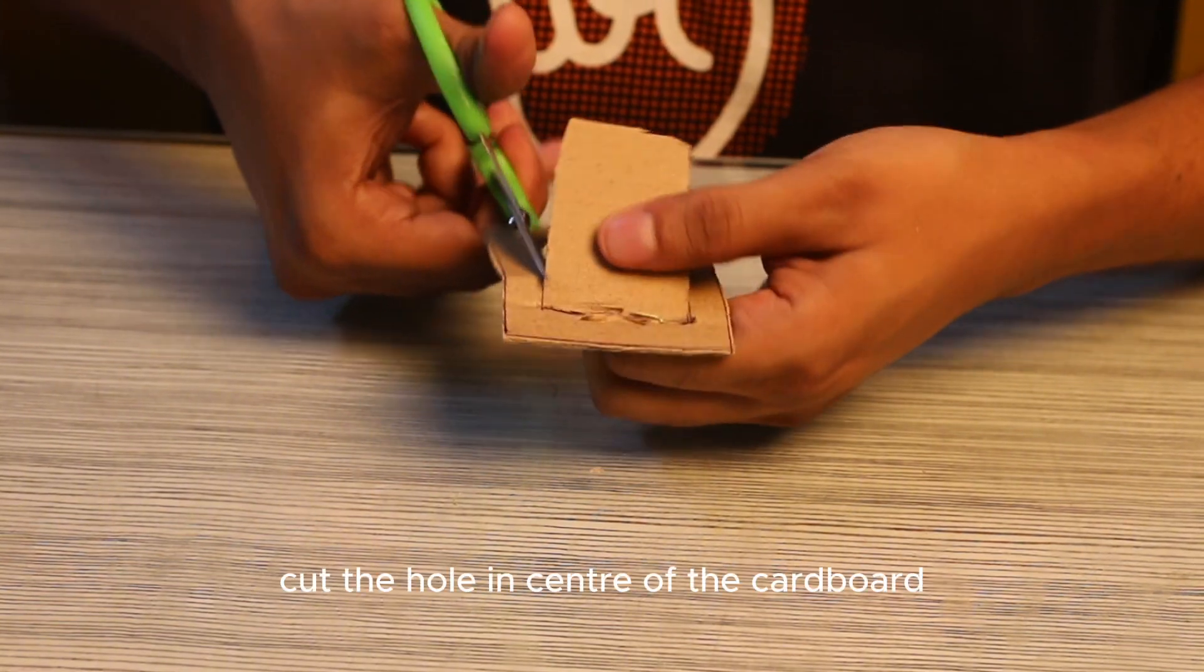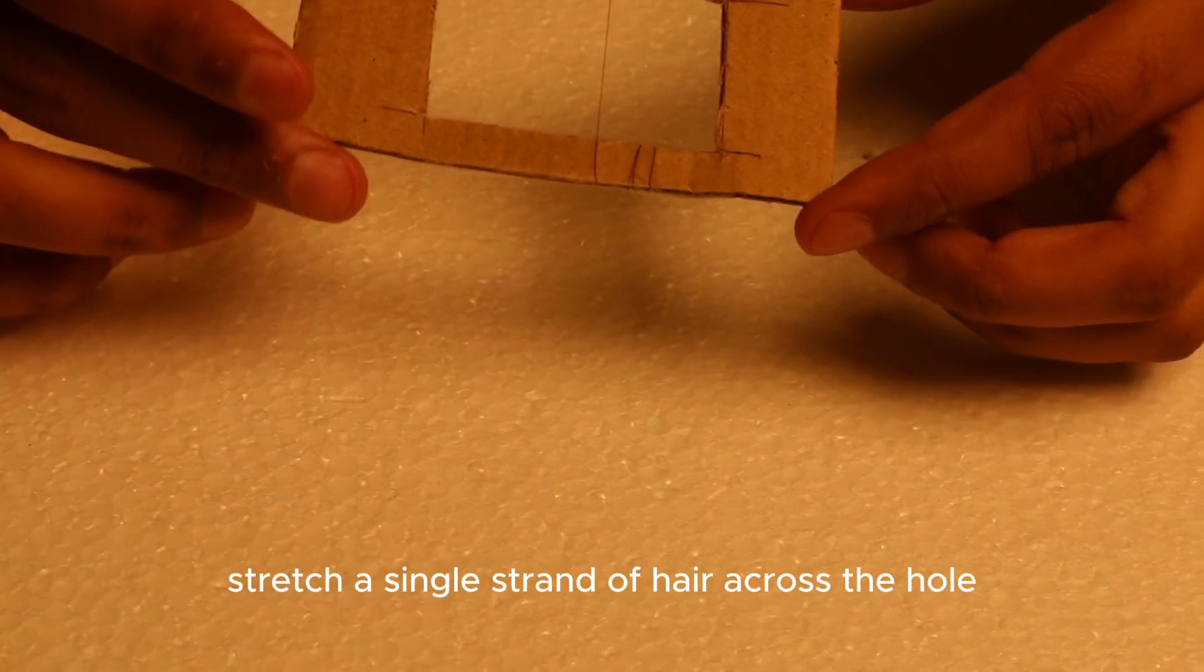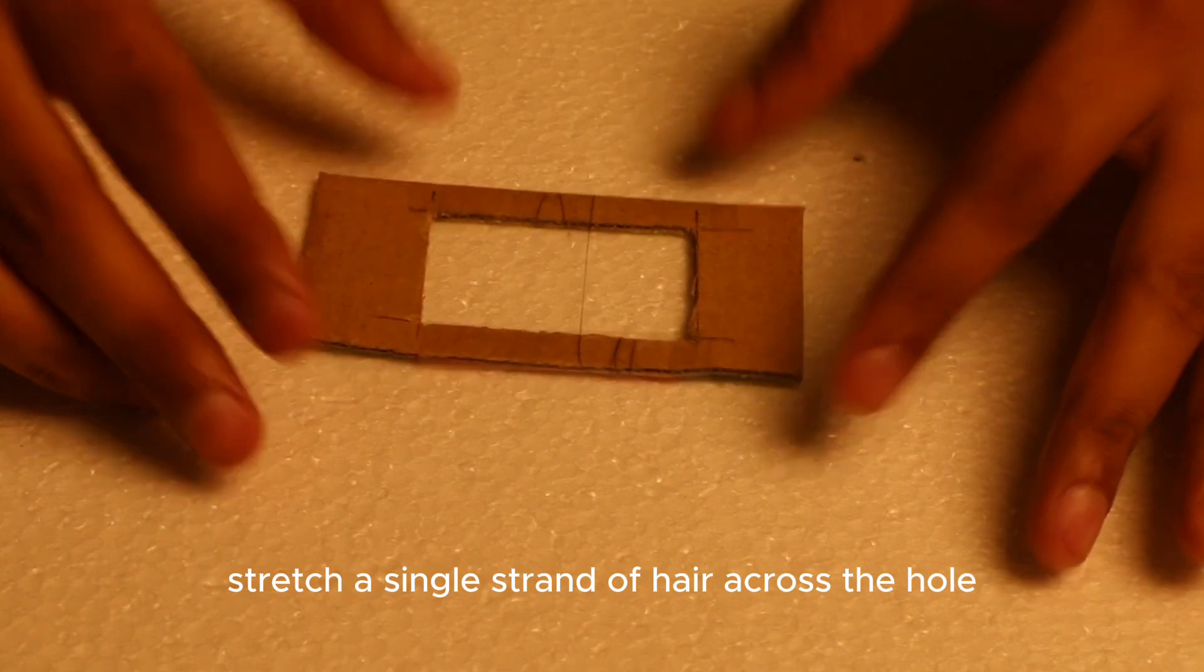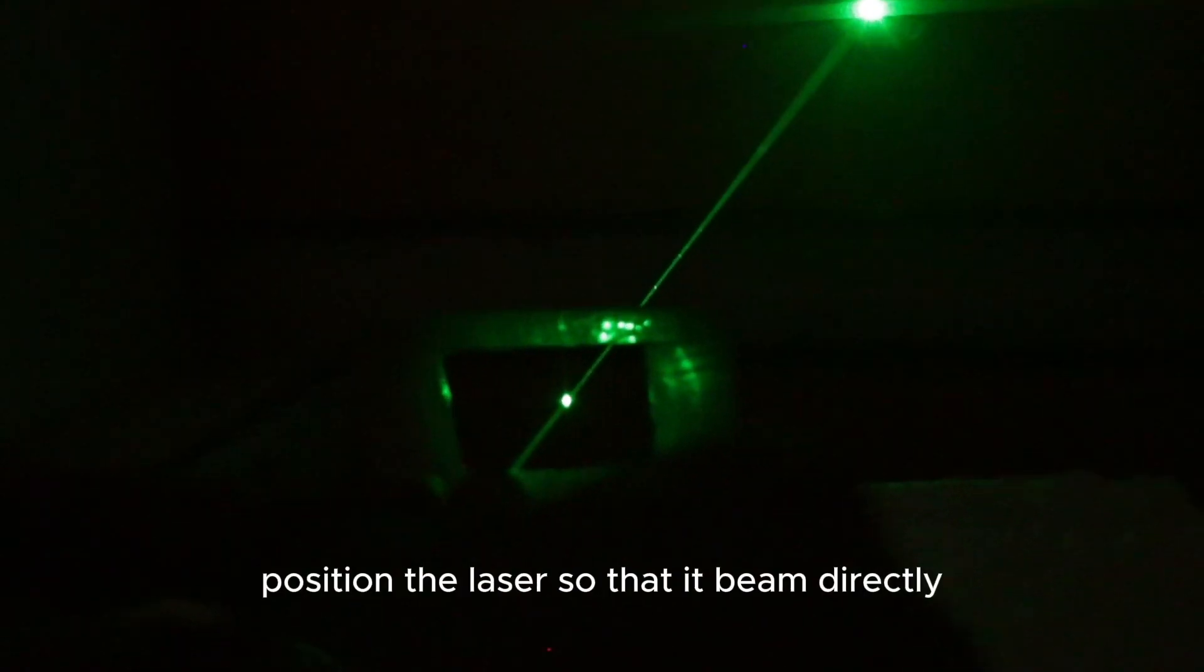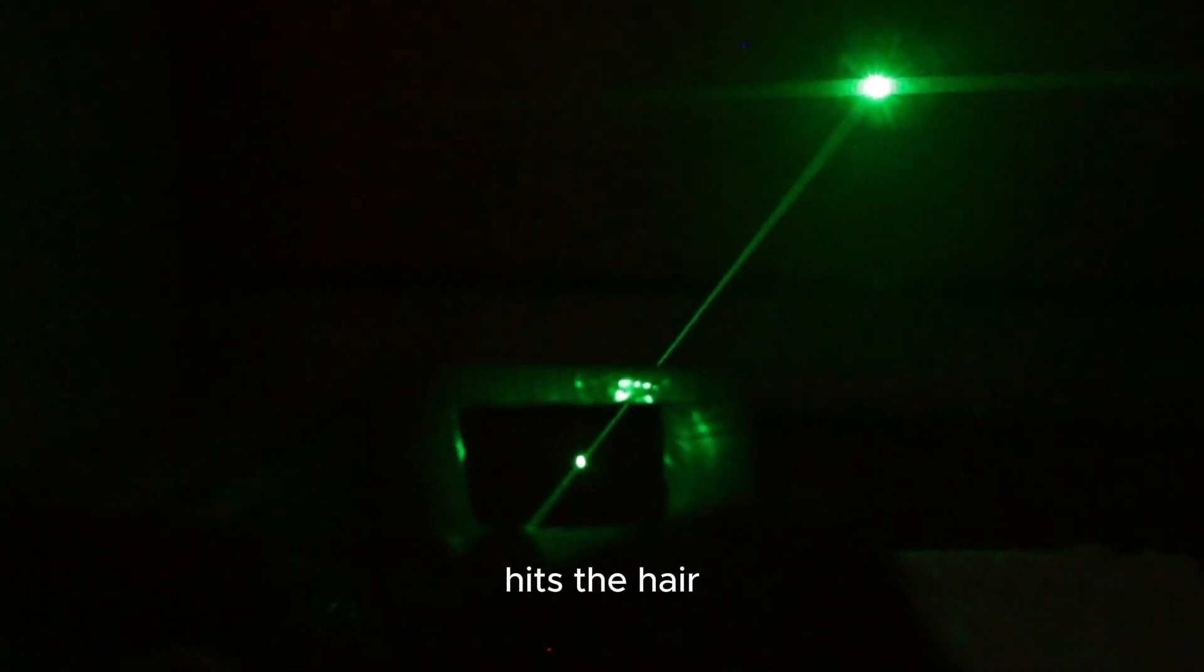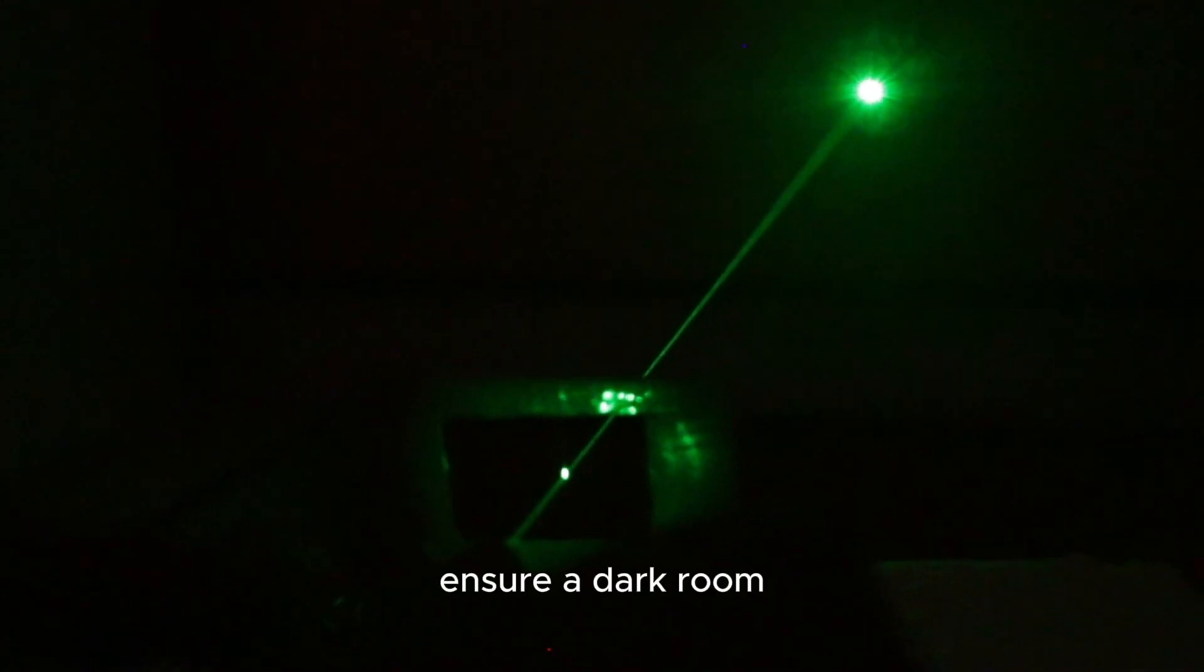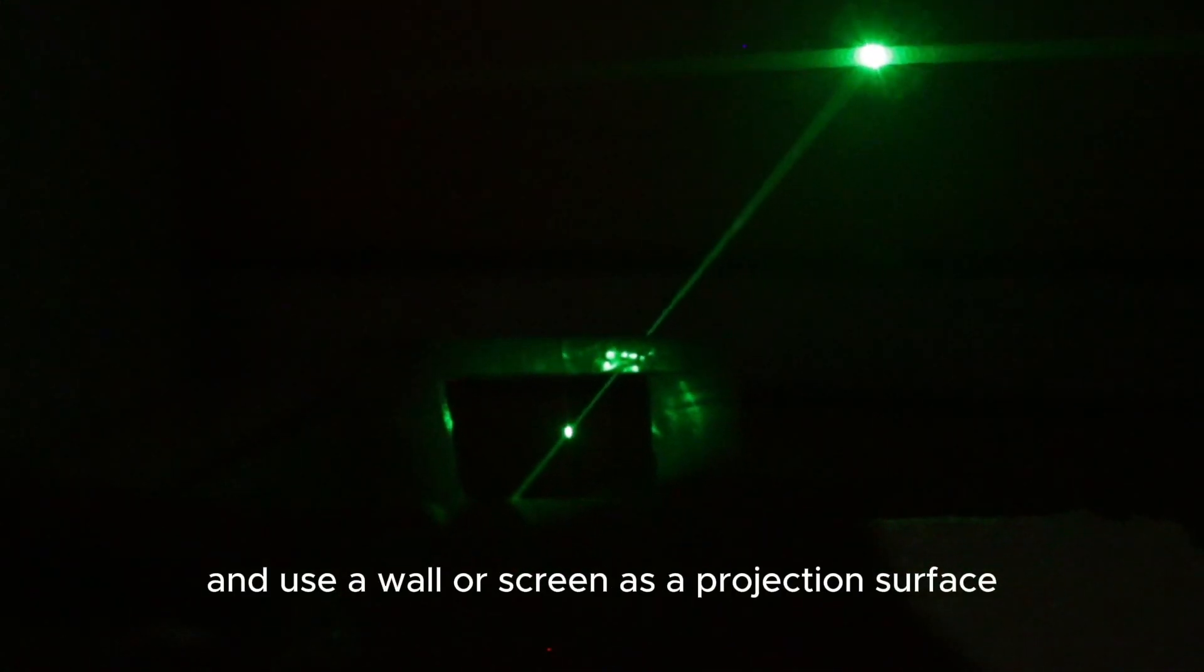Cut a hole in the center of the cardboard. Stretch a single strand of hair across the hole and tape it securely. Position the laser so that its beam directly hits the hair. Ensure a dark room and use a wall or screen as a projection surface.